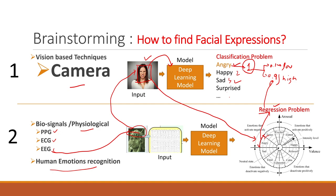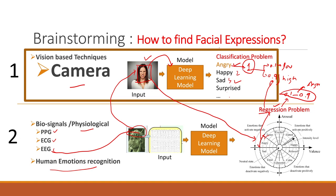In the biosignal case, we call it human emotion recognition, while for camera-based solutions, we call it facial expression recognition, which is a classification problem and is the topic of today's video. For simplicity, we have selected seven classes: angry, disgusted, fearful, happy, sad, surprised, and neutral. Neutral is used when we cannot identify a clear facial expression.